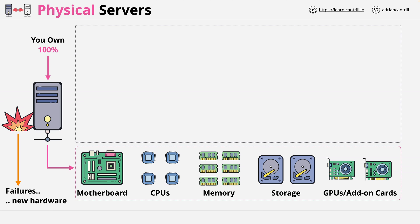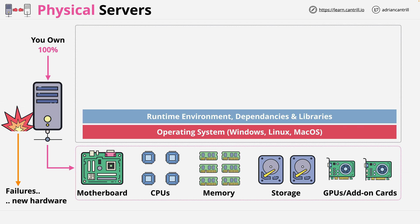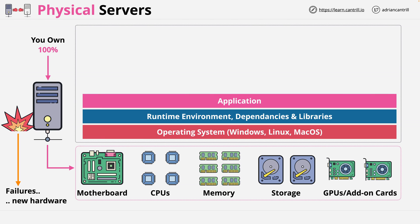What runs on a physical server varies, but at a conceptual level you start with the operating system — the software which allows you or an application to interact with the hardware. You'll want to run something on this operating system, maybe an application, but applications use runtime environments — dependencies and libraries. If you run an application written in Java, for example, there are additional things that run within that Java runtime environment which are required for your application, and these also consume resources. At this stage you have a functional application running within the runtime environment on the operating system. But what about all the remaining capacity of the server which you aren't using?